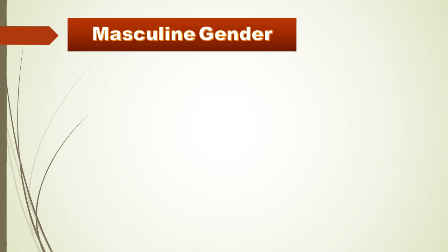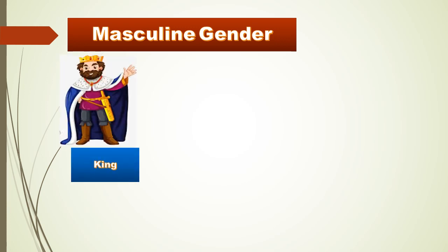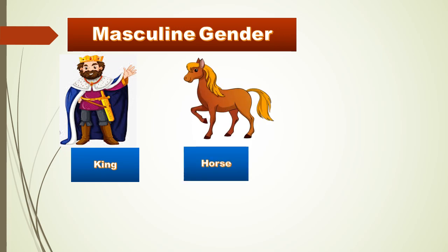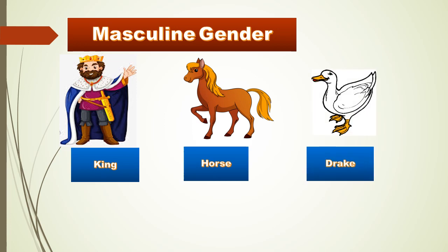When a noun stands for a male, it is called masculine gender. For example: king, horse, drake, boy, ox, father, and so on. These nouns all belong to the male category and hence are known as masculine genders.